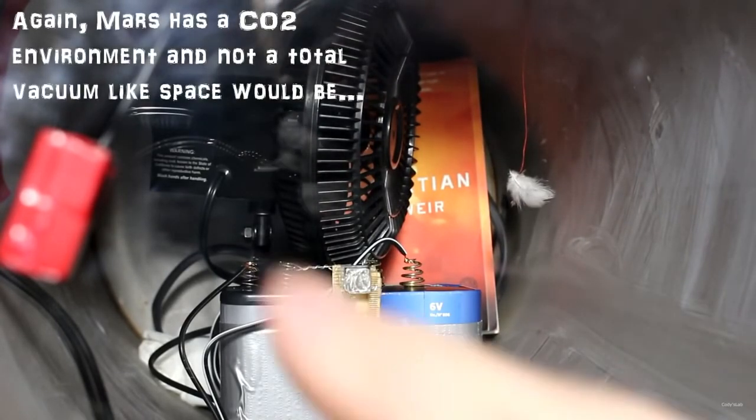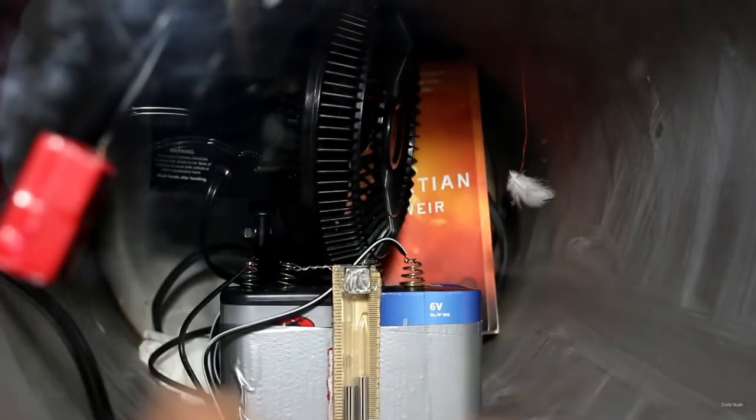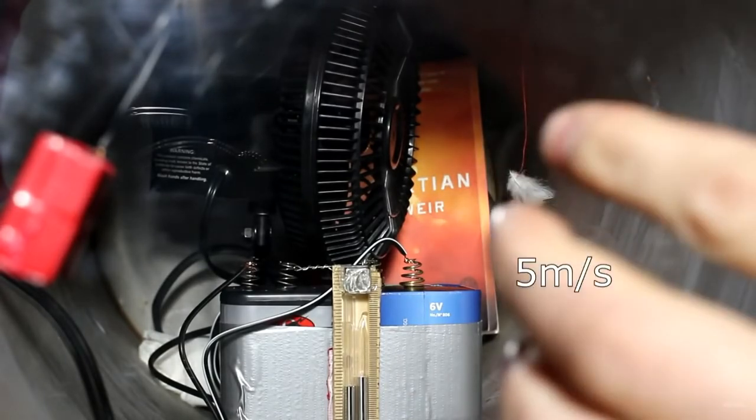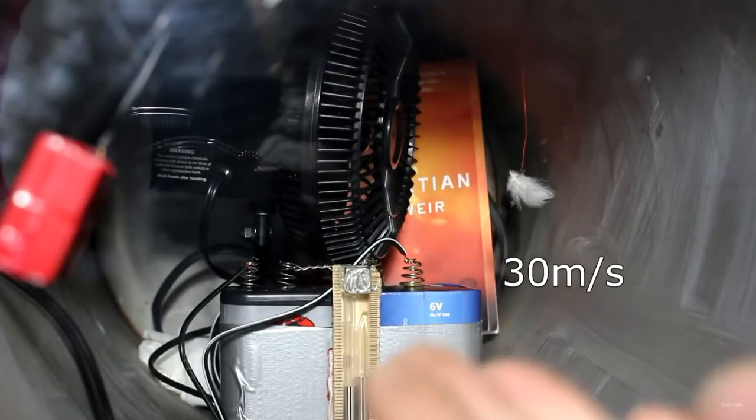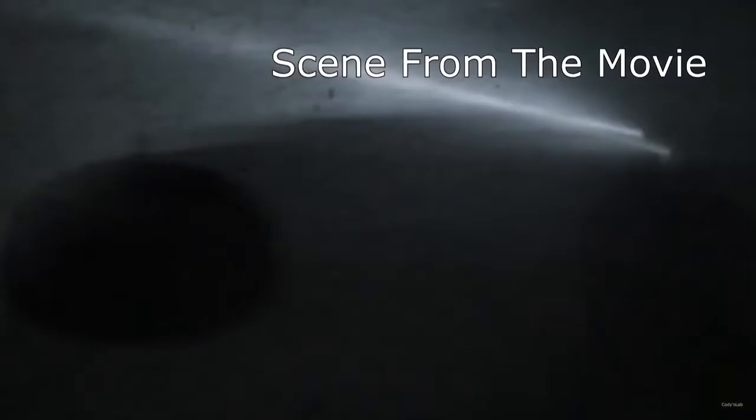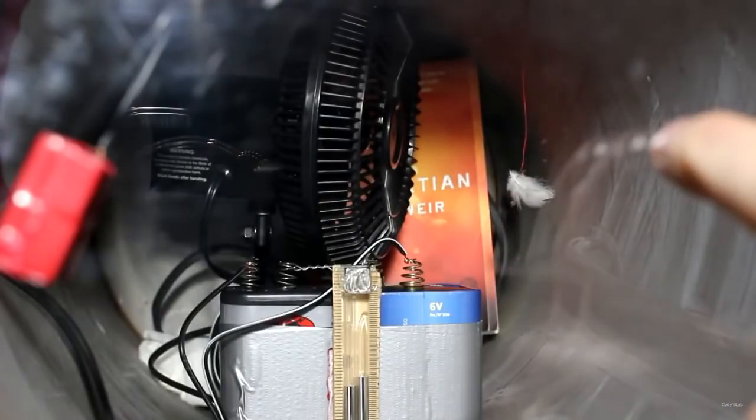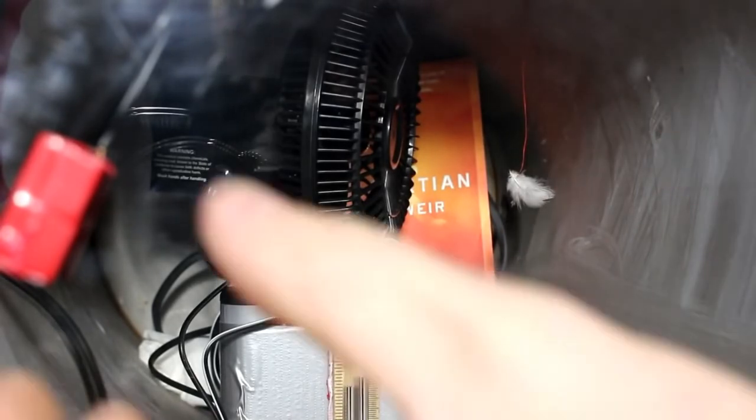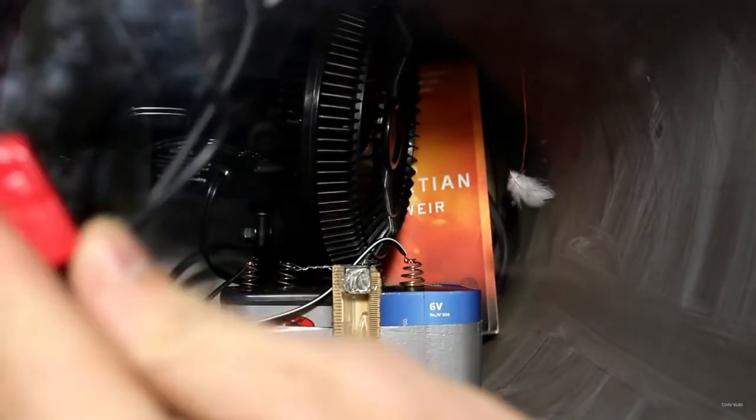And let's turn on this fan. Now place your bets as to what's going to happen to this feather. The fan's only going to produce maybe 10 miles per hour worth of wind. On the surface of Mars, the fastest recorded wind speed is about 70 miles an hour, but the super storm in The Martian had wind speeds of 200 miles an hour—20 times what we have here. To compensate for that, I imagine the feather's about 20 times easier to push over than a spaceship. So let's see what happens. Fan's on.